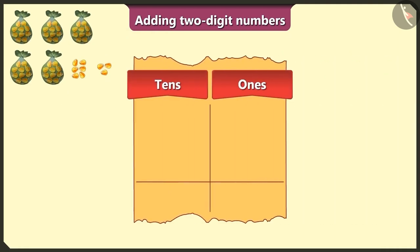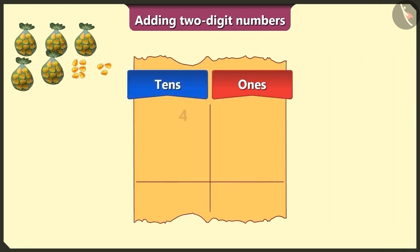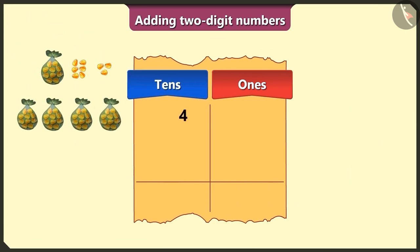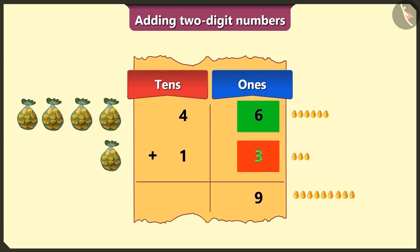For the number 46, we will write 4 in the tens box and 6 in the ones box. To add 13 to this number, we write 1 in the tens box and 3 in the ones box. Now first we will add the numbers in the ones box. 6 and 3 will make 9.